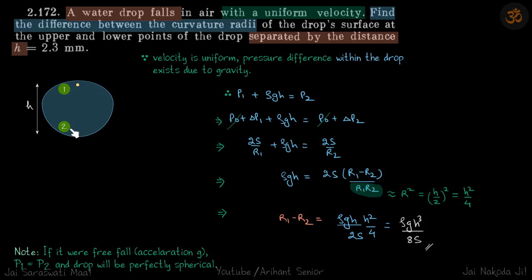But here, because of the uniform velocity, the shape is not spherical anymore. This radius is bigger than that of the spherical one, and this radius is smaller than that of the spherical one. That's why we assume their average is still going to be the radius of the spherical one, which will be h/2.